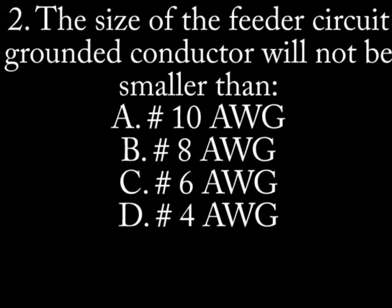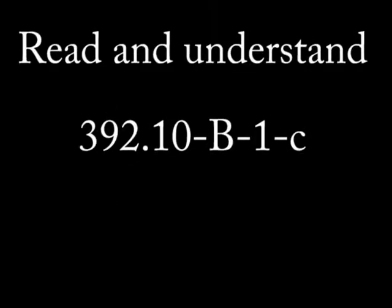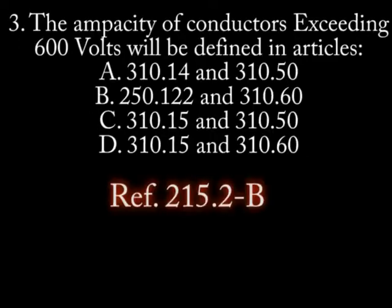Question 2: The size of the feeder circuit grounded conductor will not be smaller than: A. 10 AWG. B. 8 AWG. C. 6 AWG. D. 4 AWG. I'll give you a little hint on this — you might want to look at Article 392.10-B-1-C.